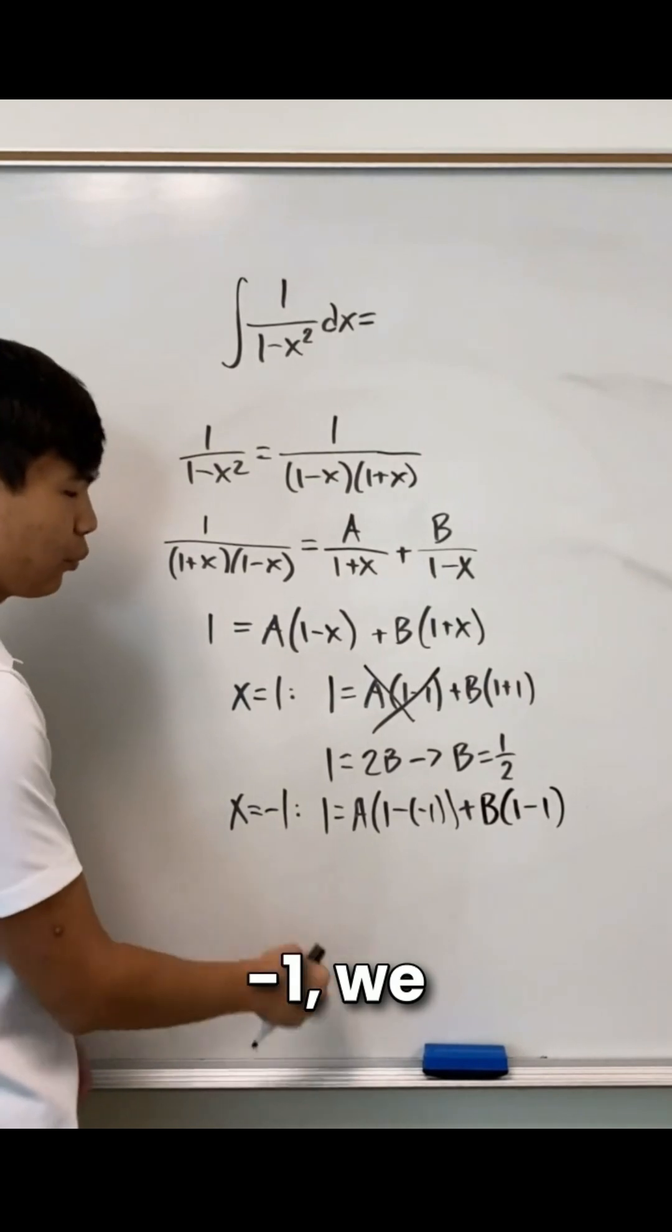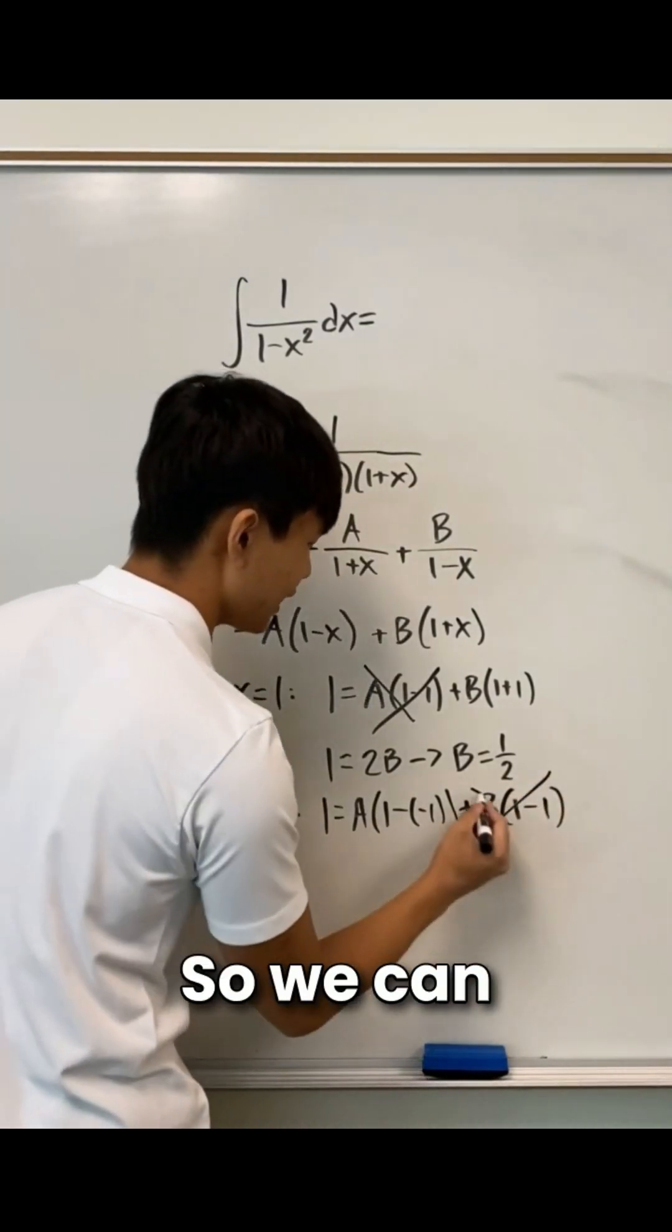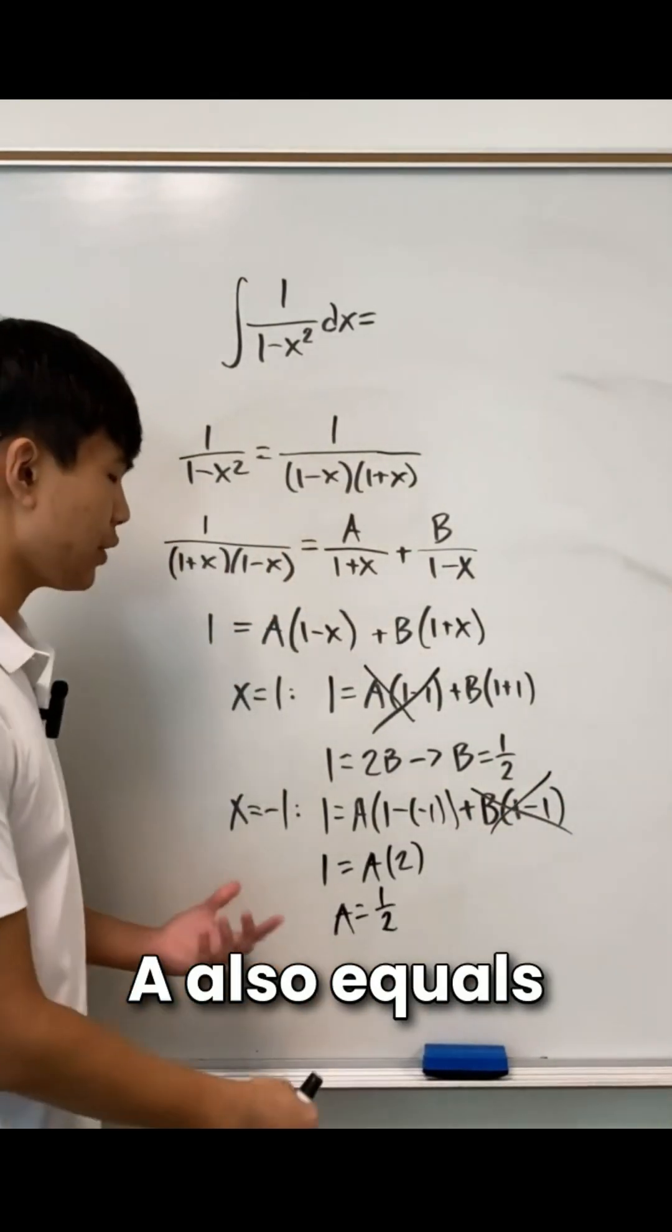If we set x equal to negative 1, we see that this turns to 0, so we can solve for a. We see that a also equals 1 half.